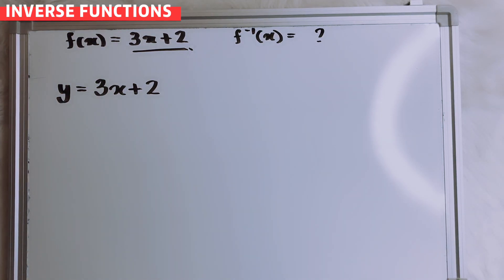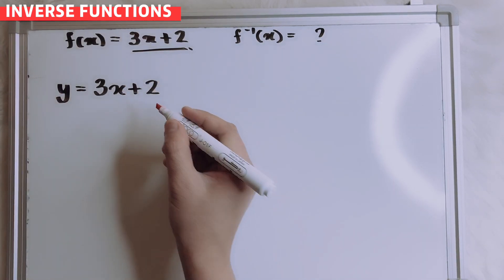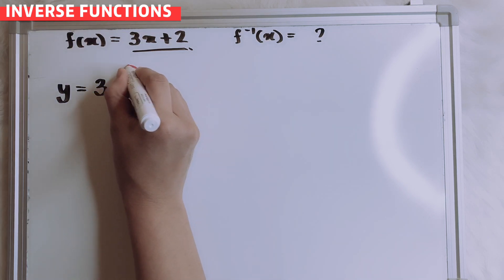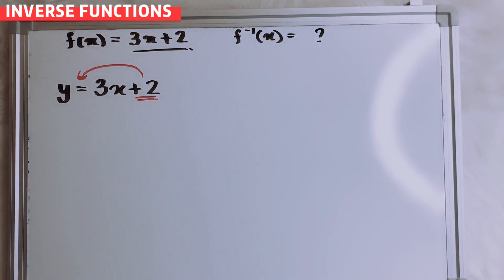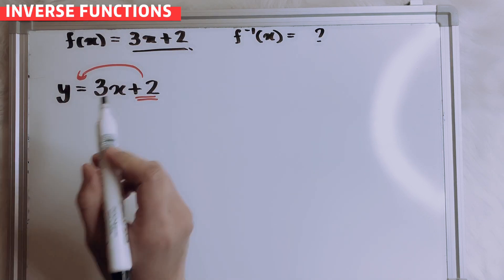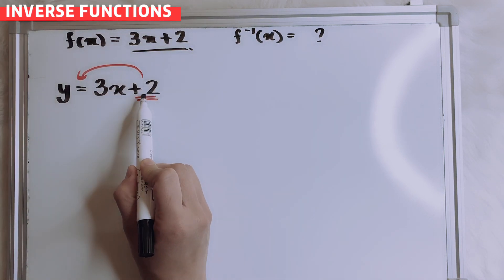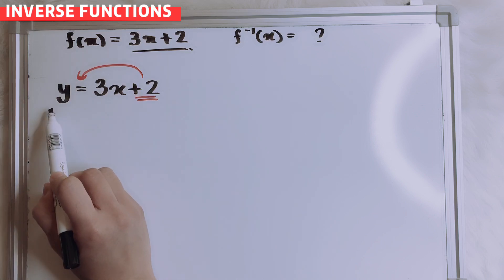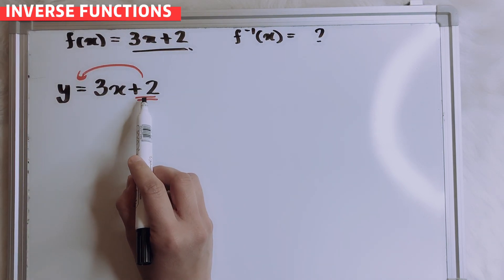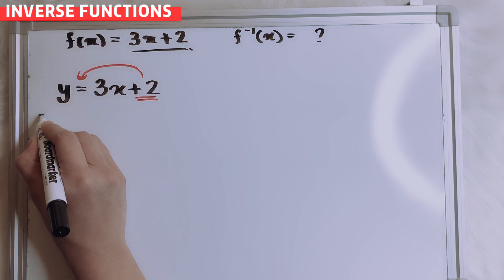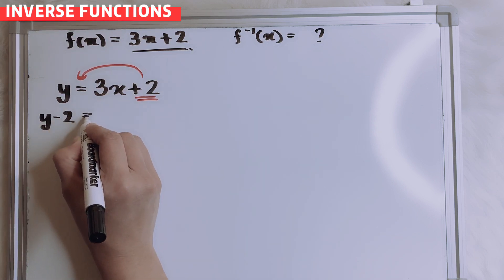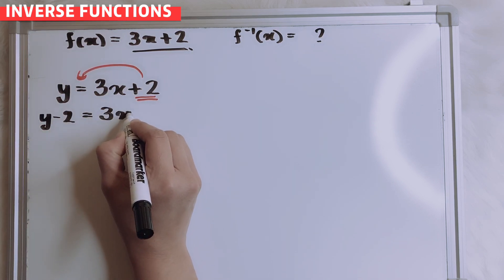Alright, so I want to move plus 2 to this side. So this is plus, so when you want to move it from here to this side, it will be opposite. So if here is plus 2, here will be minus 2, equals to 3x.